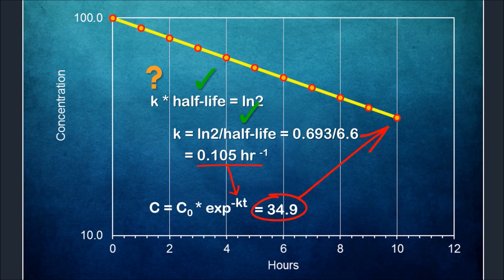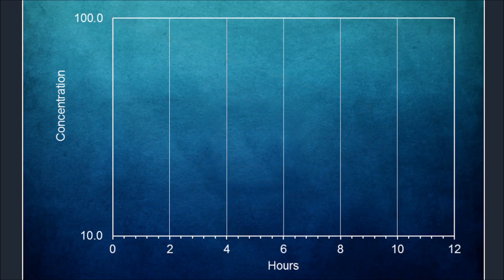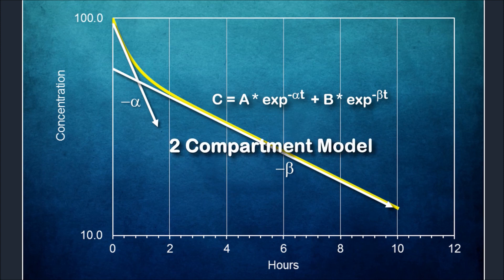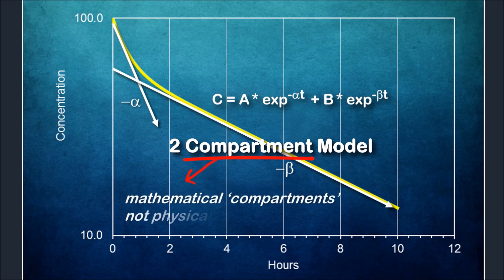Now so far, we have been using a mono-exponential equation to describe the elimination of this drug. For many other drugs however, a mono-exponential equation may be inadequate and the curve may best be described by a bi-exponential equation with two slopes and rate constants, alpha and beta. This type of elimination profile is described as a two compartment model as compared to a one compartment model for the previous mono-exponential equation.